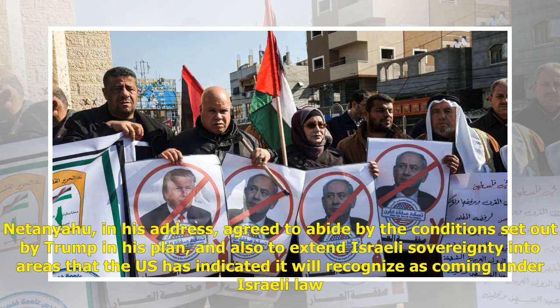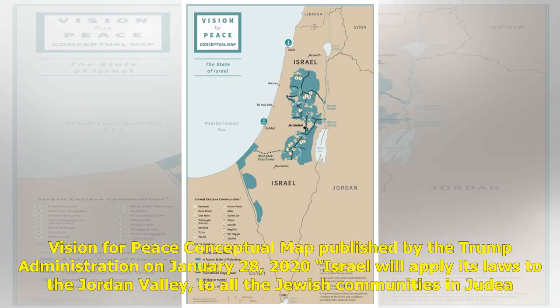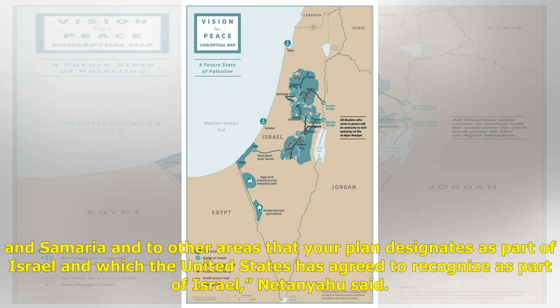Netanyahu, in his address, agreed to abide by the conditions set out by Trump in his plan, and also to extend Israeli sovereignty into areas that the U.S. has indicated it will recognize as coming under Israeli law. "Israel will apply its laws to the Jordan Valley, to all the Jewish communities in Judea and Samaria, and to other areas that the plan designates as part of Israel and which the United States has agreed to recognize as part of Israel," Netanyahu said.